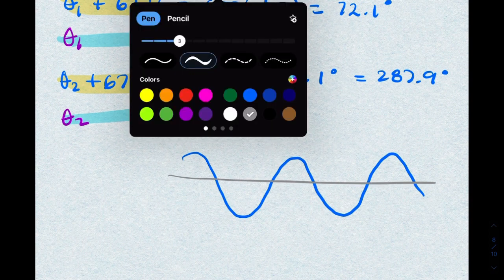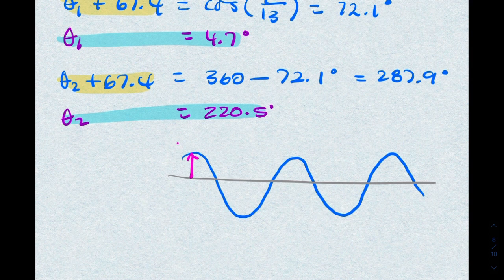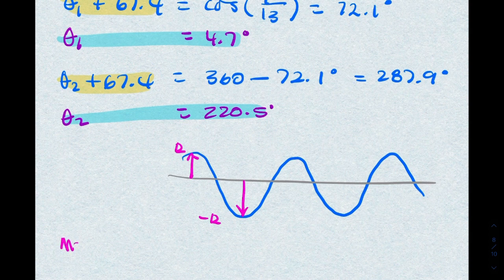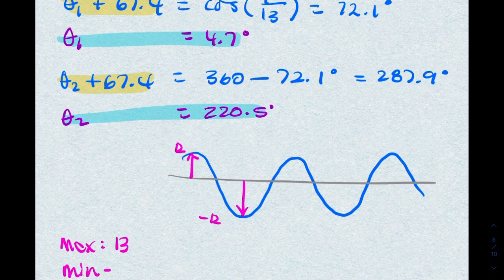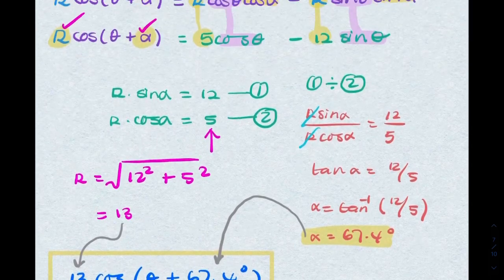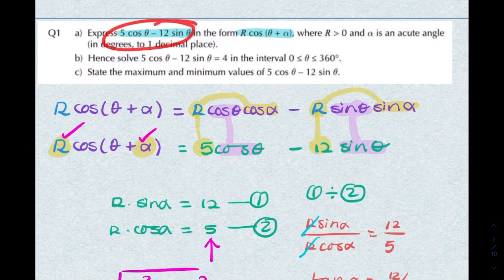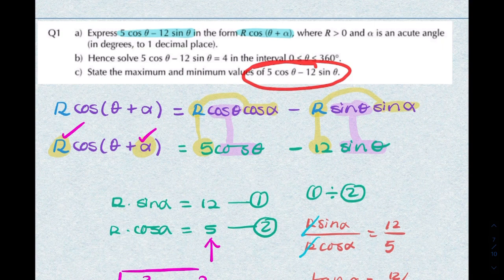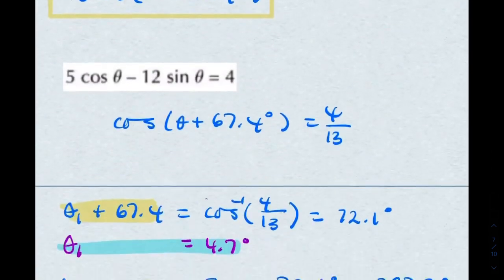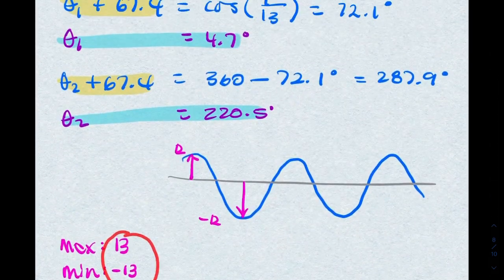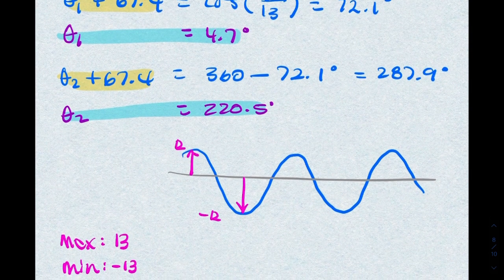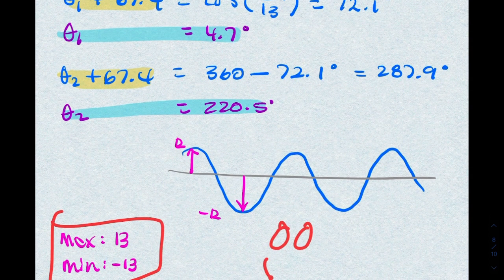The maximum value will be R and the minimum value will be minus R, so we can simply say maximum 13, minimum minus 13. Just check if there's any change to this—this is exactly the same as that, so you could say the maximum is 13 and the minimum is minus 13. So that is your final answer.